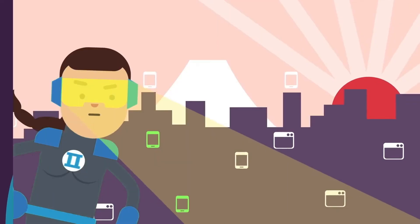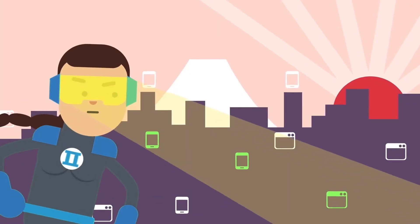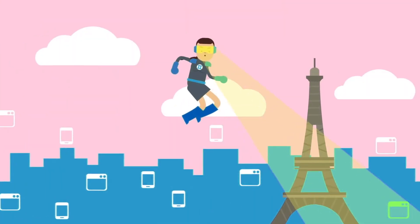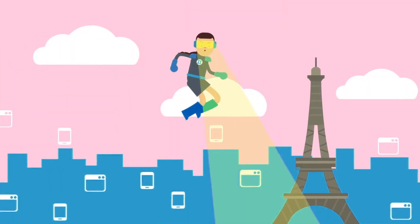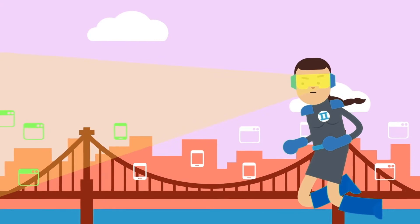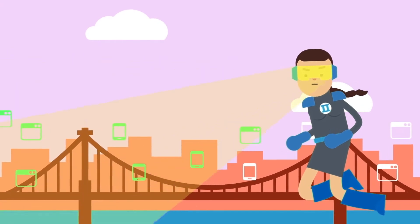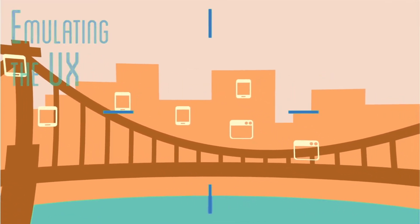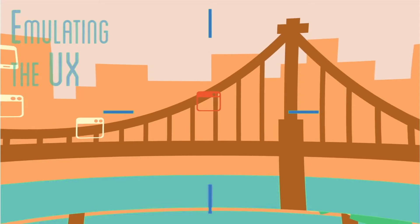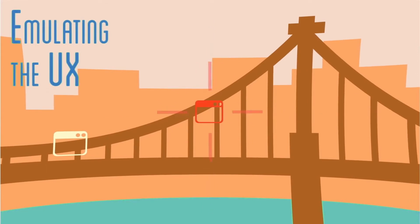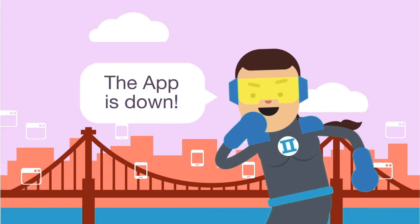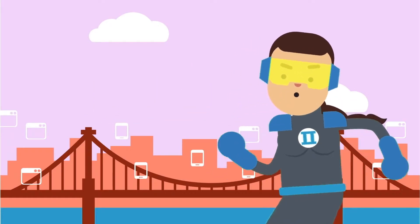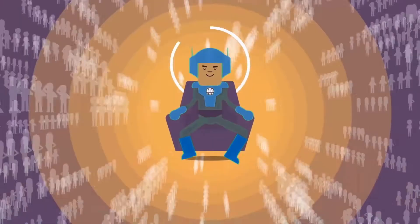Who's that over there? That's App Pulse Active — with her UX power, she's scouring the earth for performance and availability failures of the future. She's synthetically monitoring, emulating app users and devices, and catching issues before users do, so you can prevent app failures fast with minimal effort.